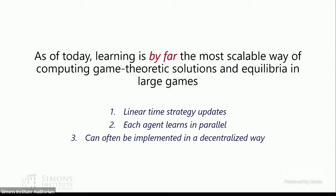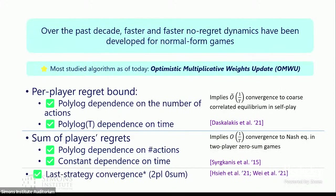Because of all these good properties, it's perhaps not surprising that over the past decade, faster and faster no-regret dynamics have been developed for normal form games. The most studied algorithm for normal form games is probably optimistic multiplicative weights update, which has incredibly strong properties. When all players use optimistic multiplicative weights update, the regret of each individual agent grows polylogarithmically over time — a result by Daskalakis — and the dependence on the number of actions is also polylogarithmic.